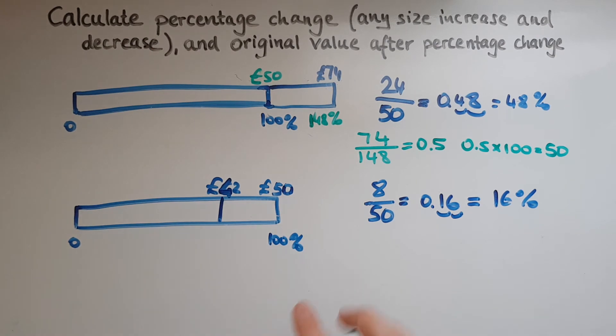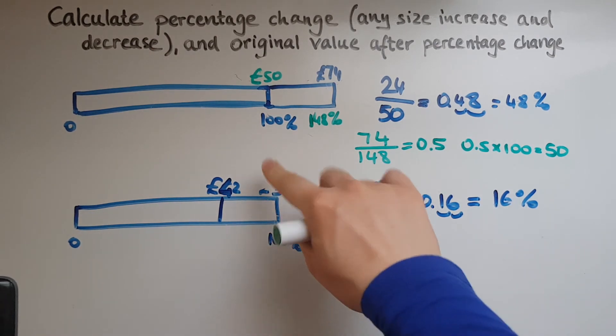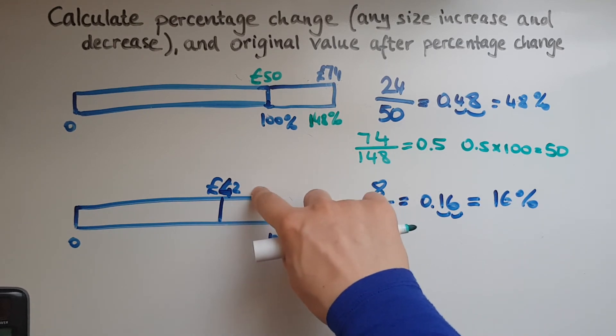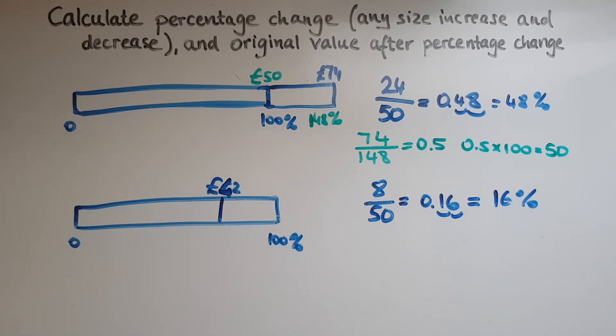Now we'll do the same with the decrease. So let's suppose we know that the new price of a pair of shoes is 42, but what was the original price? So we don't know anything that we've worked out here.